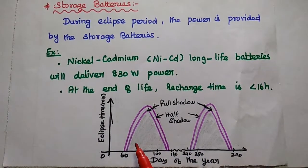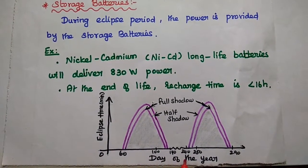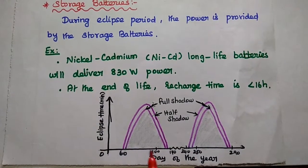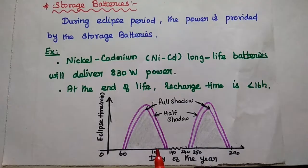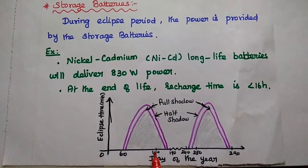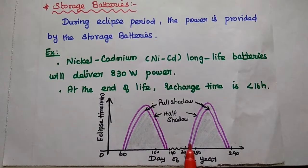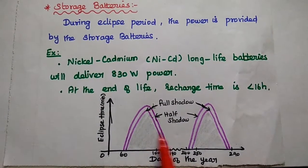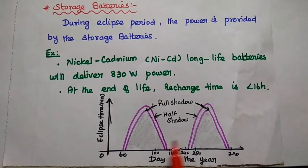This diagram depicts the eclipse time with respect to the day of the year. The duration of eclipse is around 46 days, and eclipse occurs twice a year. We can have the battery usage during these two eclipse periods.